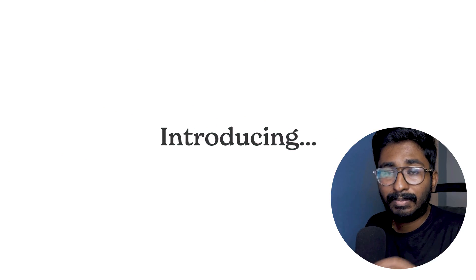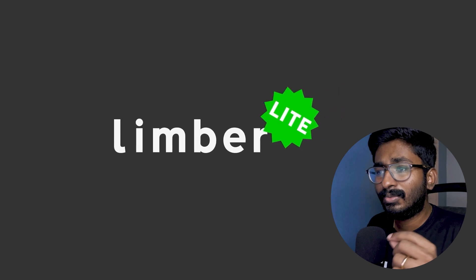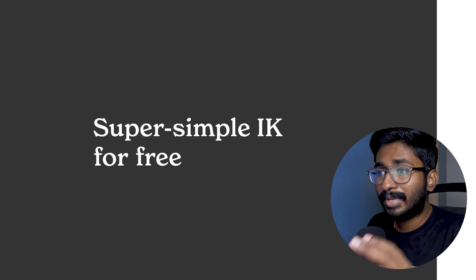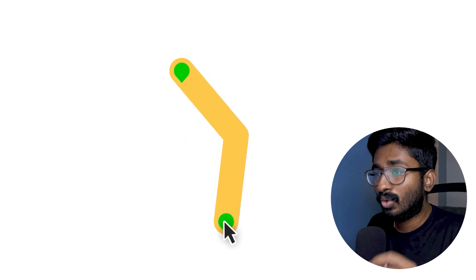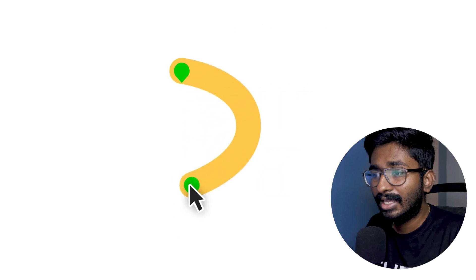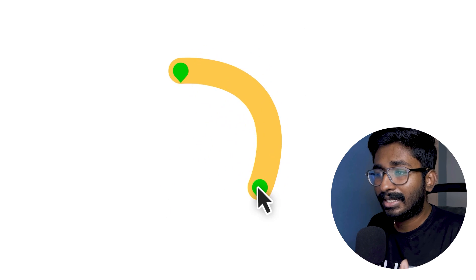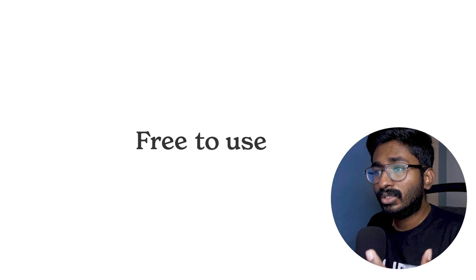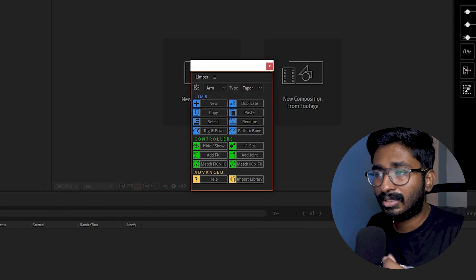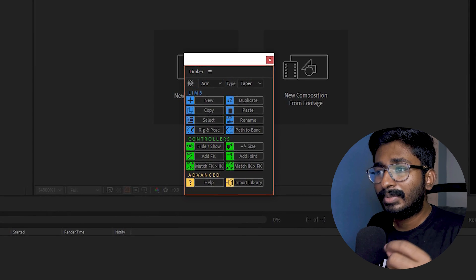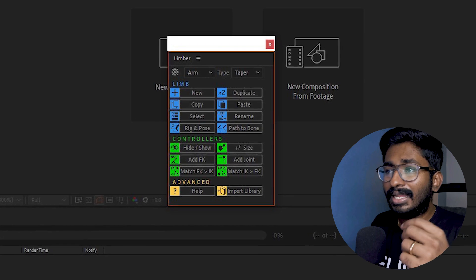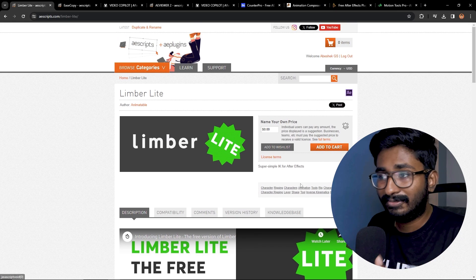The first plugin is Limber Light. If you want to select it for motion graphics, the main character animations are very useful. What you can do is easily create hand characters and legs. This is a Pro version called Limber, but there is also a light version which is completely free.